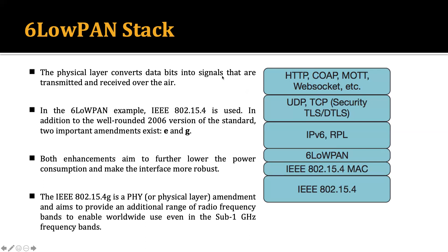The physical layer converts data bytes into signals that are transmitted and received over the air — converting digital signals to analog signals. In 6LoWPAN, IEEE 802.15.4 is used as the physical layer. The 802.15.4 standard was introduced in 2003, with amendments in 2006, 2007, and 2009 — specifically 802.15.4e and 802.15.4g — which provide additional functionality aimed at further lowering power consumption and making the interface more robust.